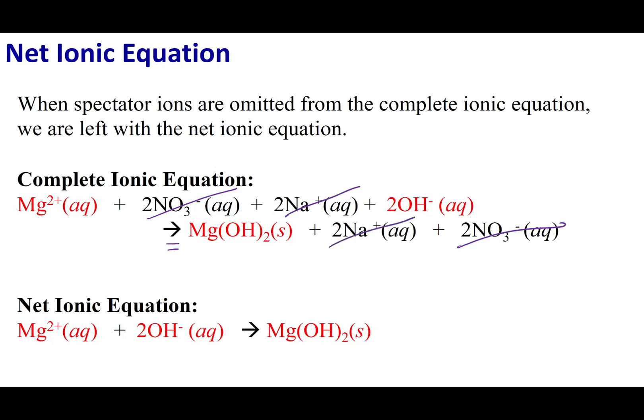When we remove the spectator ions, we're left with the net ionic equation. The net ionic equation gets to the heart of the reaction — it tells you what is actually reacting. In this case, Mg2+ ions react with two OH− ions to form Mg(OH)2 solid. This is why we have the metathesis reaction: magnesium ions and hydroxide ions, which were separate aqueous ions, are removed from solution and incorporated into a solid crystal structure.